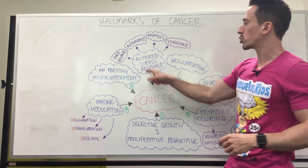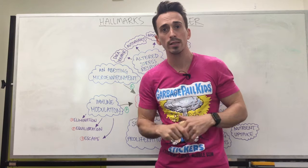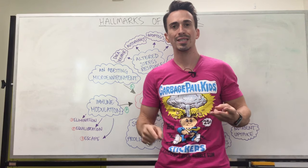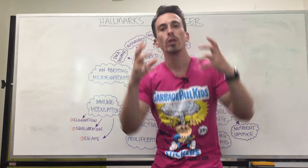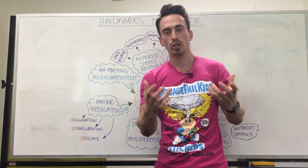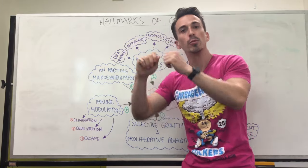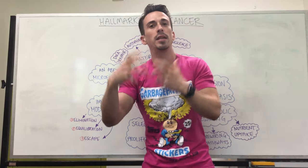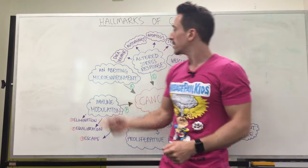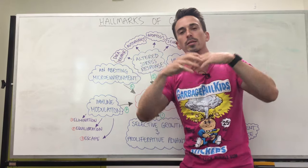Let's now move on to hallmark two: altered stress response. Cancer cells throughout their growth phases are exposed to numerous stresses, including DNA damage, hypoxia, nutrient scarcity, and even chemotherapies. Cancer cells are really good at adapting and responding to these changes to their benefit. Because cancer is a disease of gene mutations, we need DNA repair mechanisms — proteins that come along, see a mutation and fix it. This is like the mechanic in the analogy. These DNA repair mechanisms need to stop working, so there need to be mutations in these mechanisms.